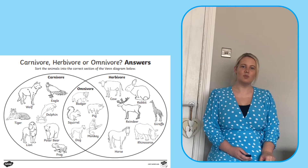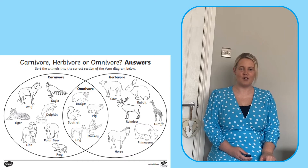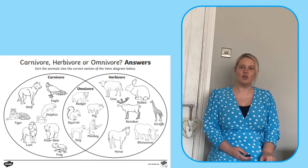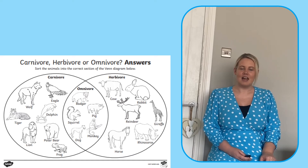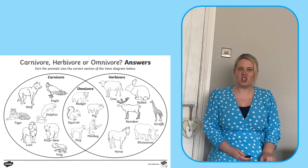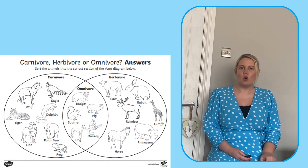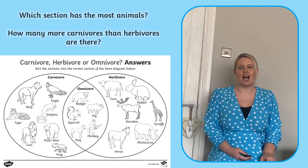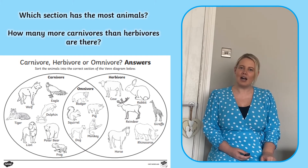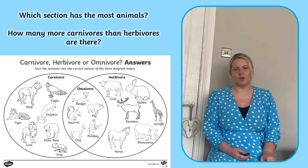To improve learners' maths understanding further, try asking them to interpret the Venn Diagram when they finish the activity. Ask questions such as which section had the most animals in, or how many more carnivores were there than herbivores.